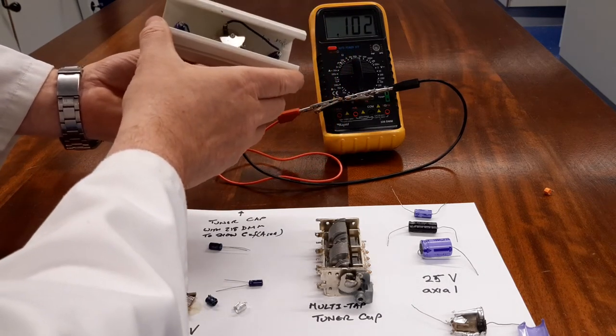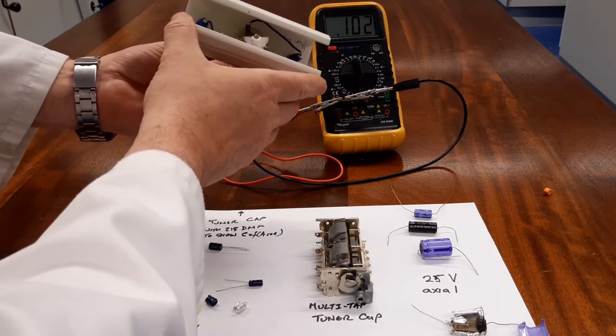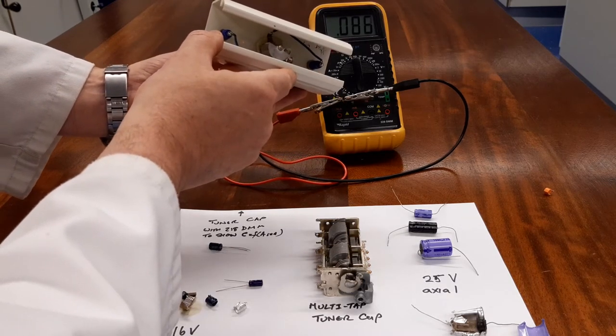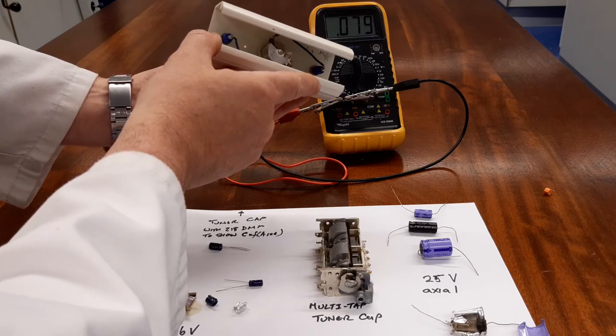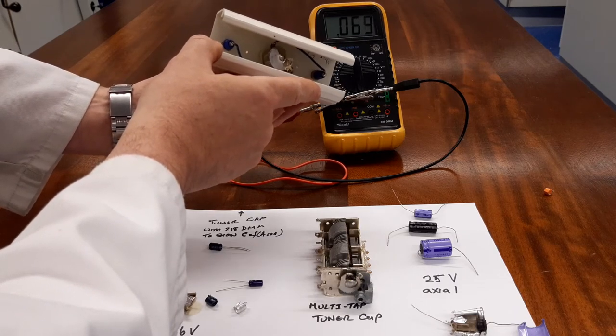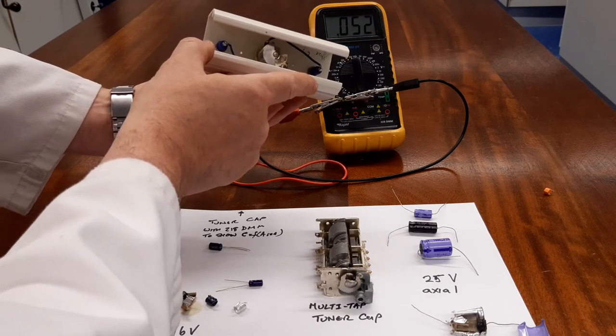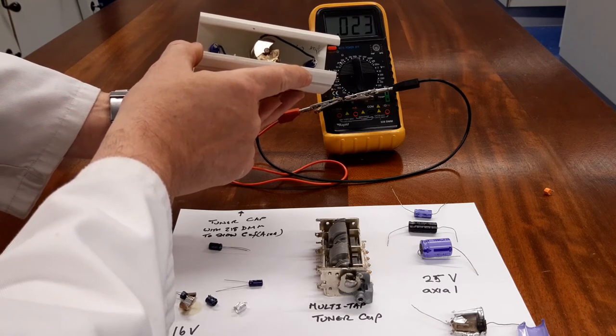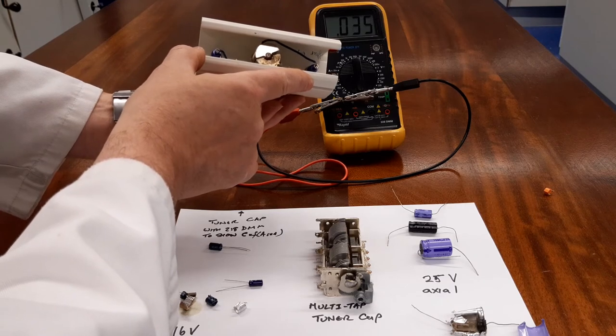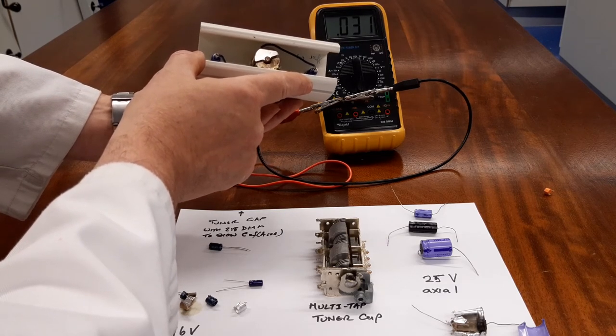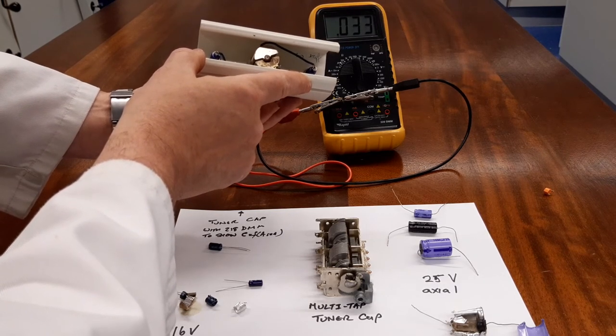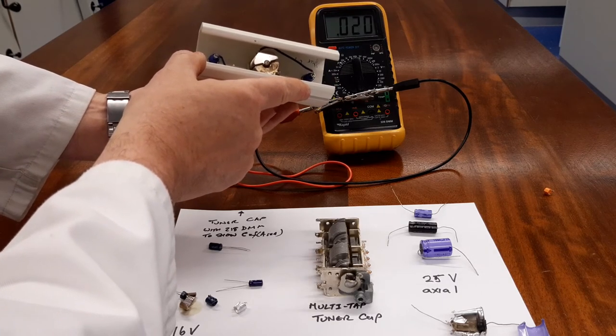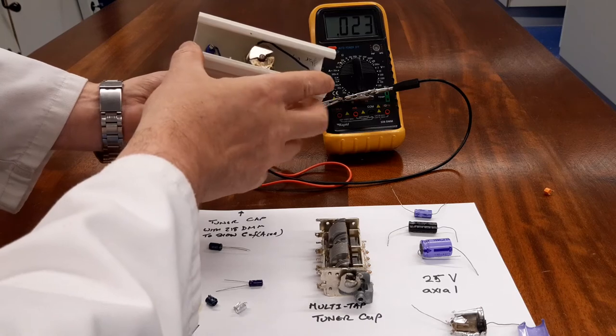goes from just under 0.1 nanofarad when they're fully overlapped. As I gradually decrease the amount of overlap, you can see the capacitance drops down to about 0.3, 0.2, 0.03, and 0.02 nanofarads when they're not overlapped.